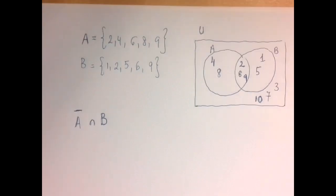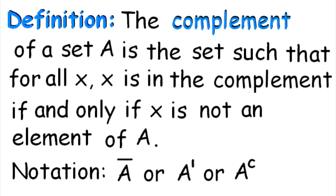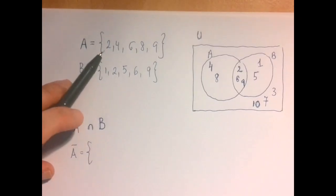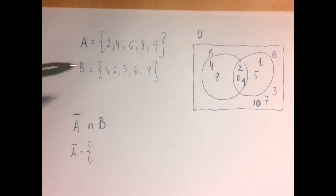So if A is 2, 4, 6, 8, 9, then the complement of A is everything except for 2, 4, 6, 8, 9. So as we count, whatever is not in A goes into the complement. It's everything but A.